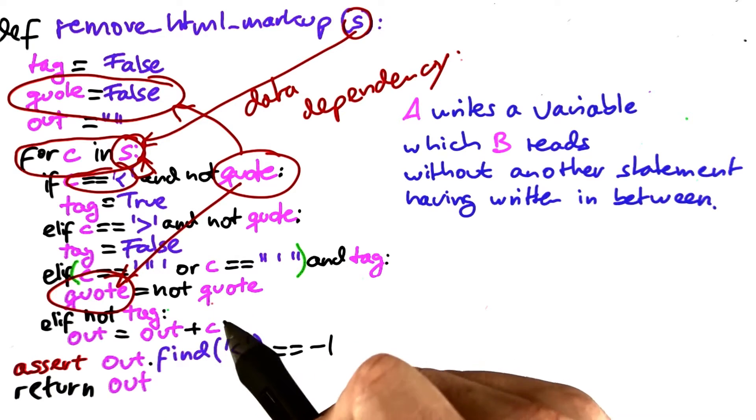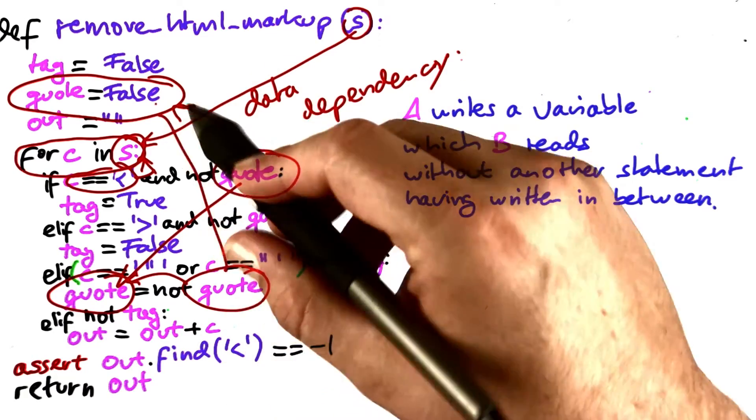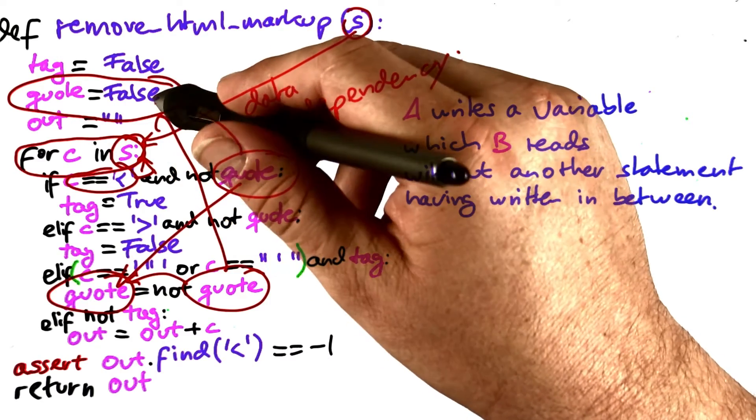Likewise, if we want to know where quote comes from, quote comes from this statement. So we see again, here quote is being written, here quote is being read, so this statement depends on itself. And quote again can either come from this location or can come from the original assignment.